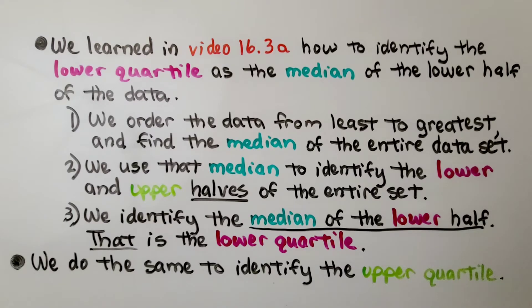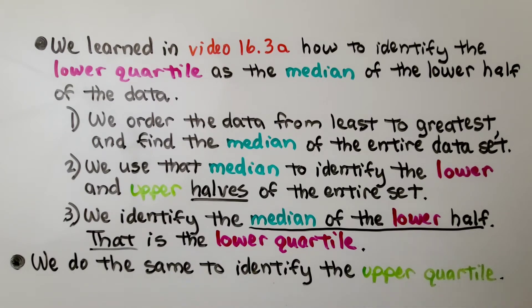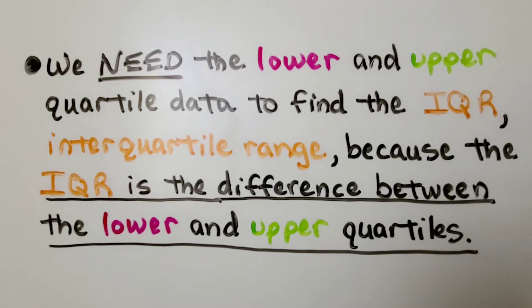We learned in video 16.3a — linked in the description if you missed it — how to identify the lower quartile as the median of the lower half of the data. We order the data from least to greatest and find the median of the entire data set. We use that median to identify the lower and upper halves. The median of the lower half is the lower quartile, and the median of the upper half is the upper quartile. We need both to find the IQR, because the IQR is the difference between the lower and upper quartiles.